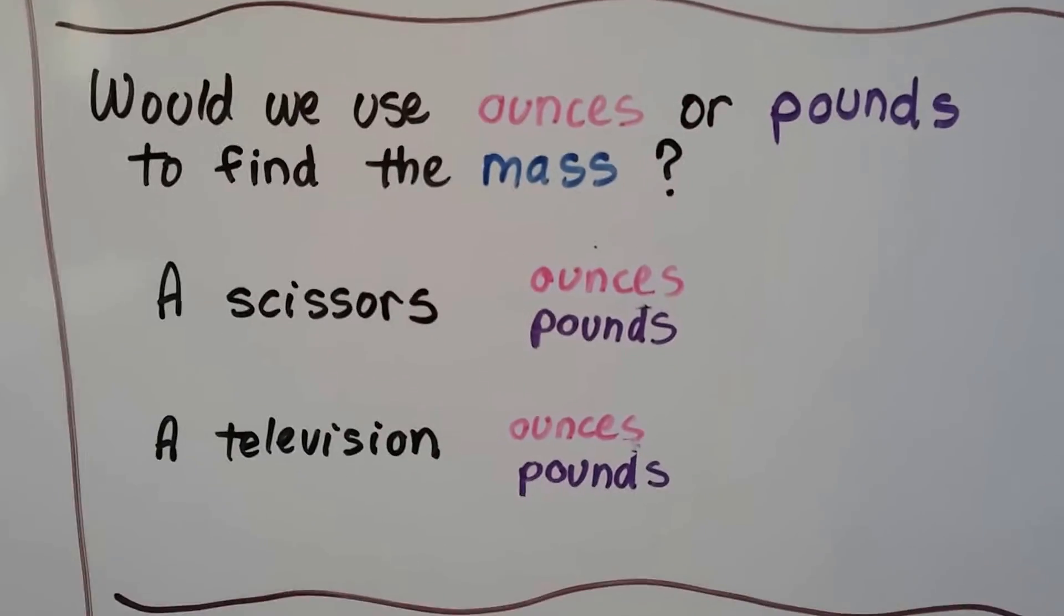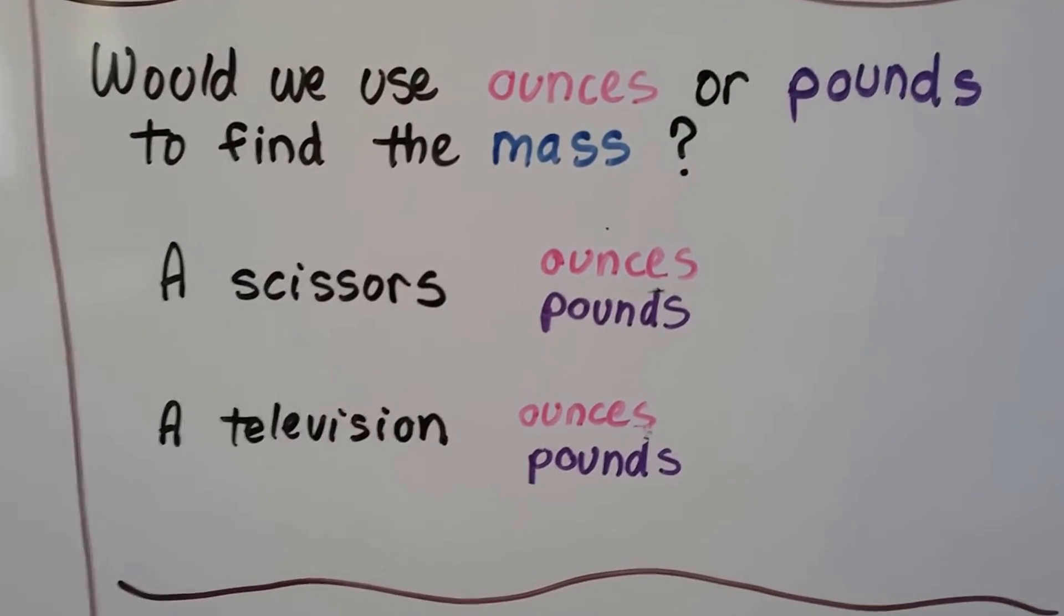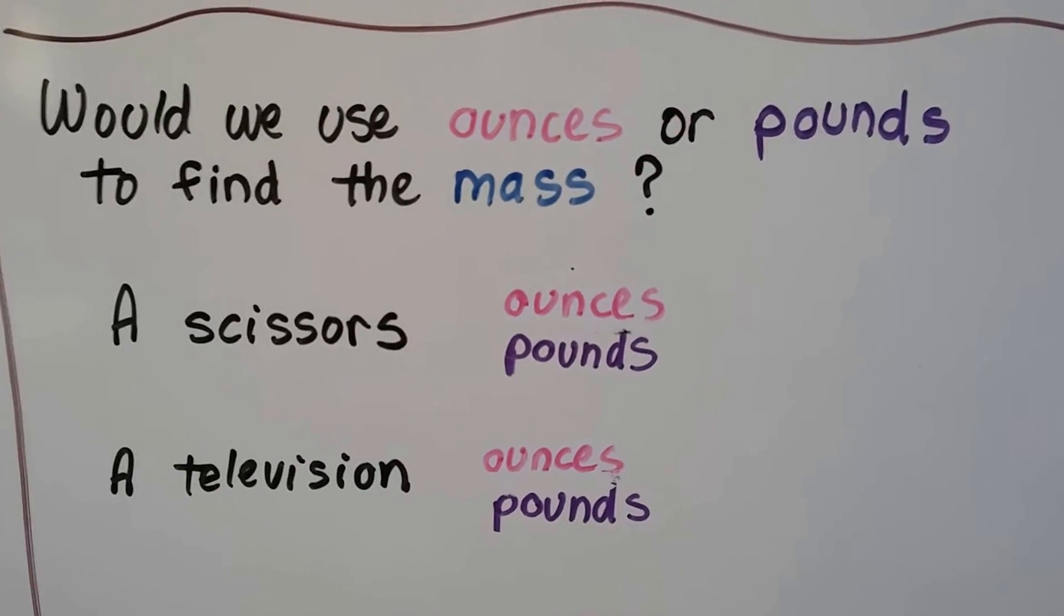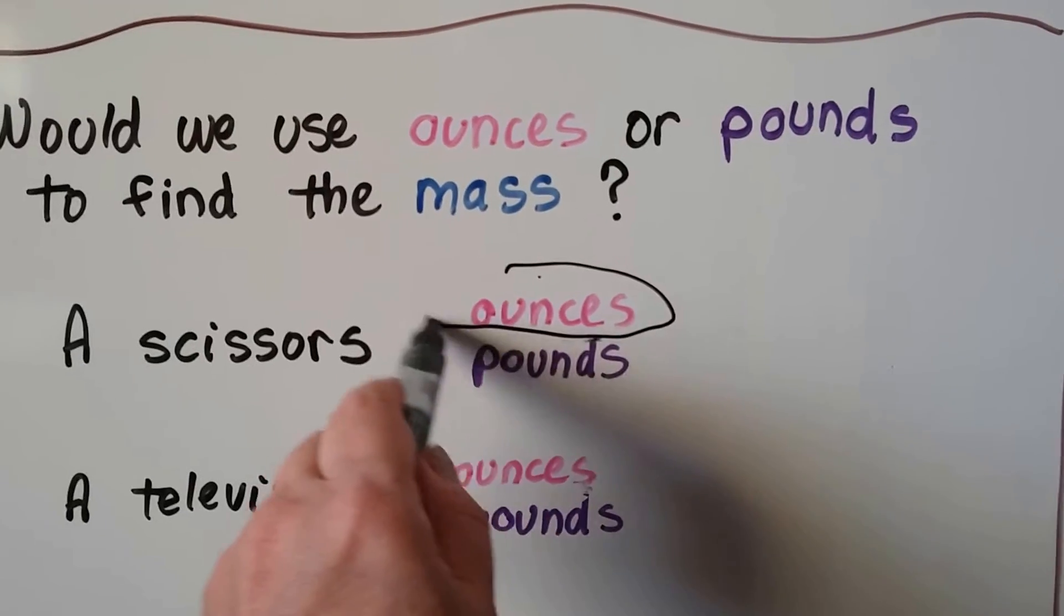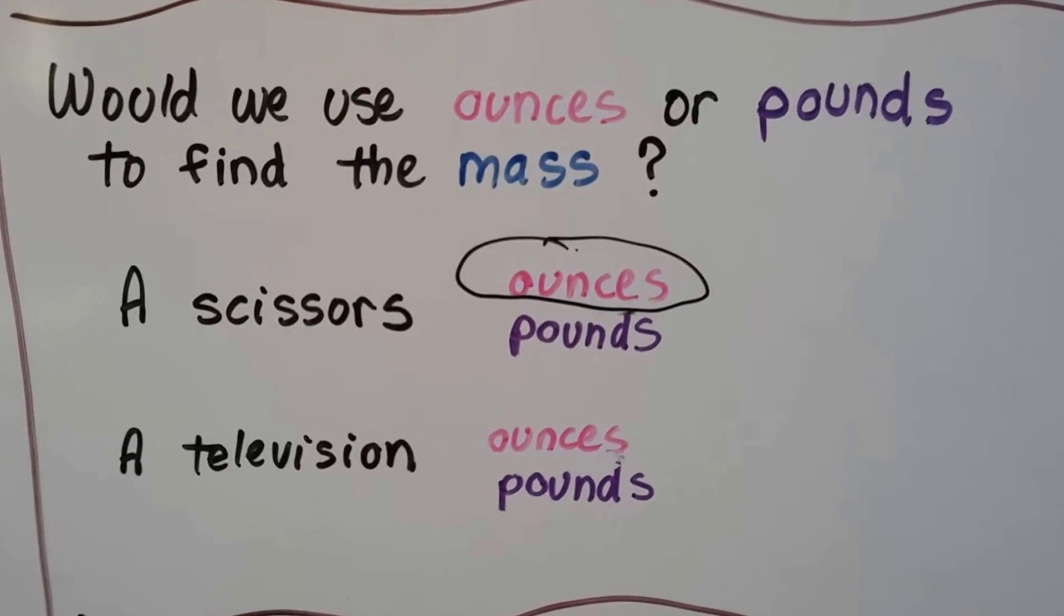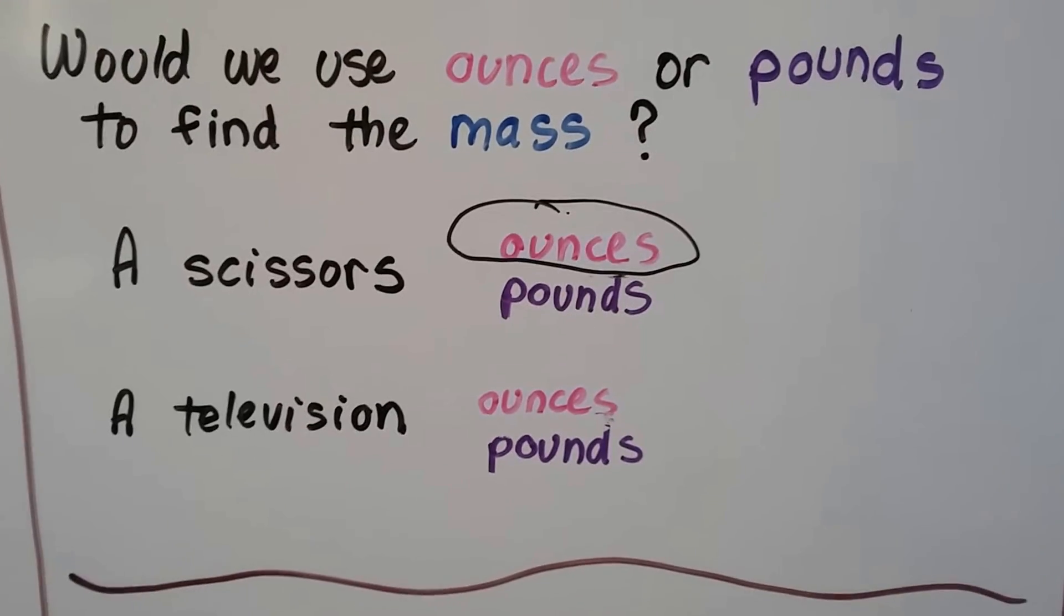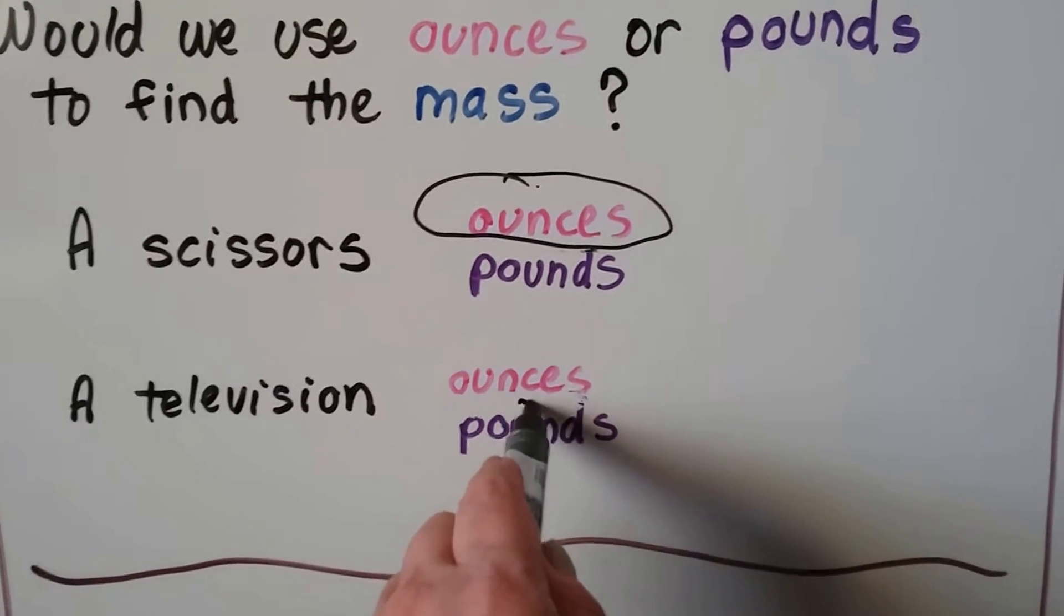Would we use ounces or pounds to find the mass of a scissors? Well, scissors aren't very heavy. So if you said ounces, you'd be right. They don't weigh very much. What about a television? Well, televisions can be heavy. So we would measure them probably in pounds.